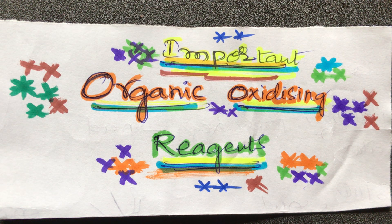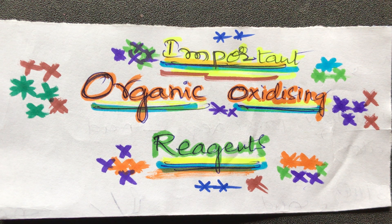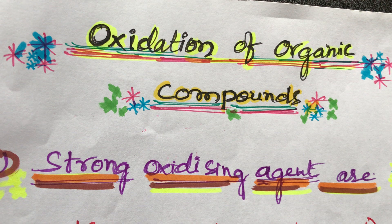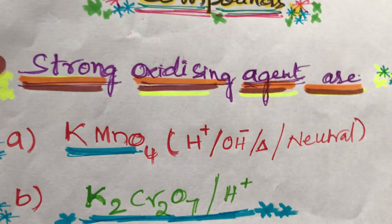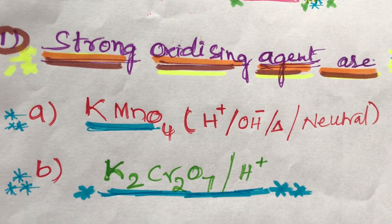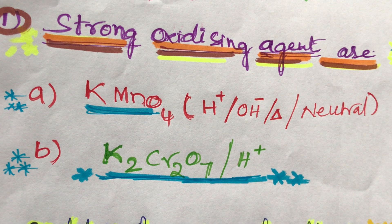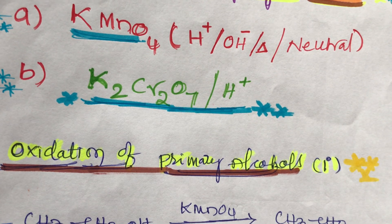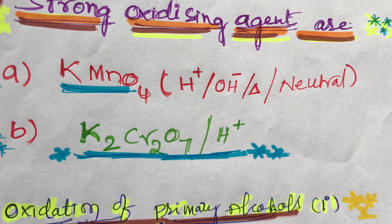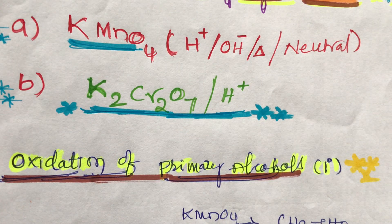Hello students. A very important topic for NEET and IIT-JEE is oxidation of organic compounds. The first strong oxidizing agents are KMnO4, potassium permanganate, which works in acidic, basic, and neutral medium. The second strong oxidizing agent is potassium dichromate, K2Cr2O7.